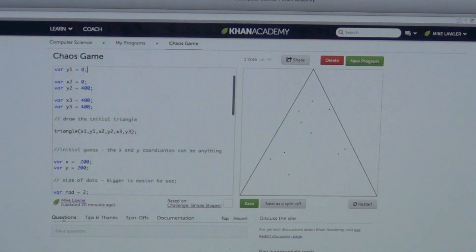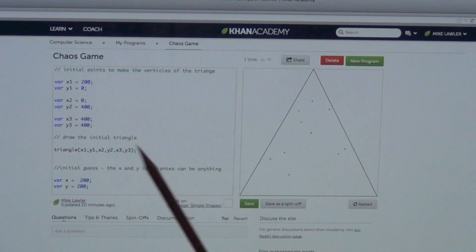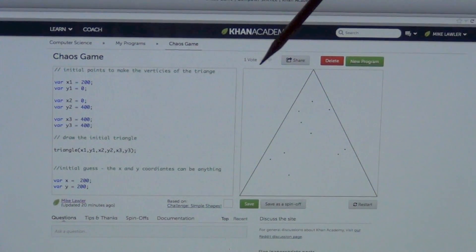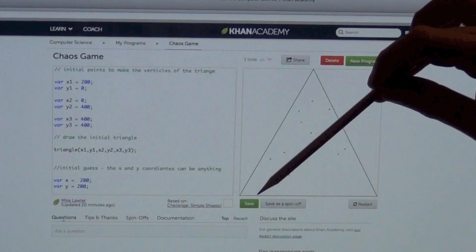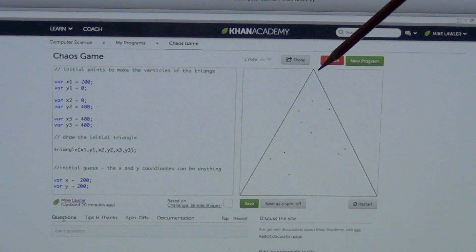So what the Chaos Game is, we'll go back up to the top, first you draw a triangle. Okay, and so you can see here I've made the three points of the triangle. 200 comma 0. If you remember, and you might not know, up at the top corner is 0, 0. And x goes across this way to 400. And y goes down to 400. So 200 comma 0 says go over 200 and down 0.